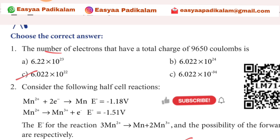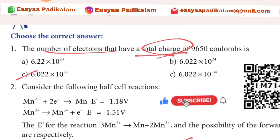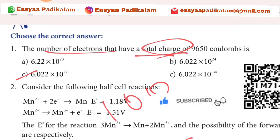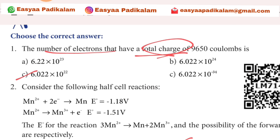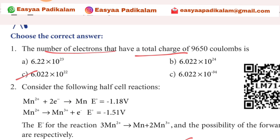First question: the number of electrons that have a total charge. If we charge the charge, we have to be 100% of the charge. There is a current charge. The answer is 6.022 into 10 power 22.